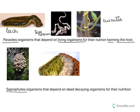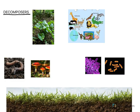Then we have saprophytes — such as mushrooms and bread mold. Especially in the rainy season, we find mold growing on bread left open; that is a saprophyte. Saprophytes depend on dead and decaying organisms for their nutrition. Now let's understand the roles of decomposers: decomposers are bacteria and fungi, and they play an important role in decomposing dead and decaying matter.